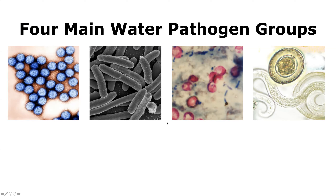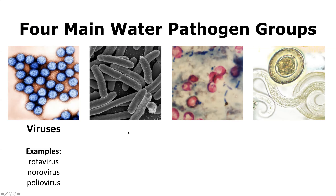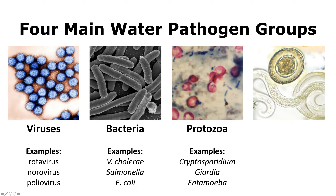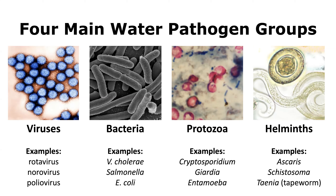Human pathogens are most commonly grouped into four categories. Viruses are the smallest, with examples including rotavirus, norovirus, poliovirus, and coronavirus. Pathogenic bacteria include Vibrio cholerae, Salmonella, and some E. coli strains. Protozoa, which are eukaryotes, include Cryptosporidium, Giardia, and Entamoeba. Helminths, also known as intestinal worms, excrete microscopic eggs in feces found in wastewater; examples include Ascaris (roundworm), Schistosoma, and Taenia (tapeworm).